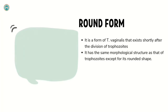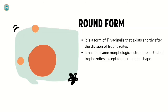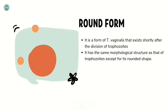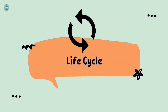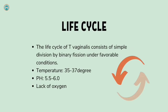However, there is a round form that exists shortly after the division of trophozoites. It has the same morphological structure as the trophozoite, except for its rounded shape.